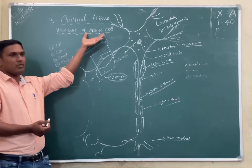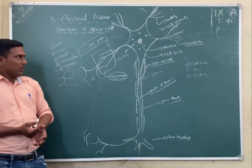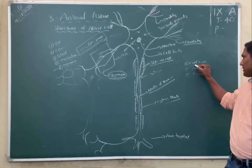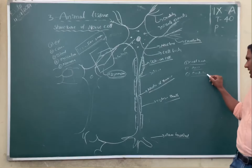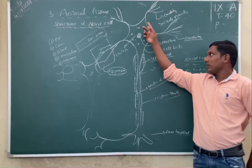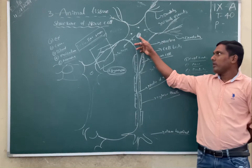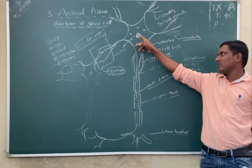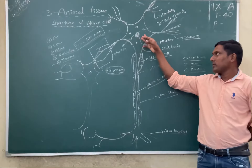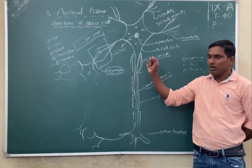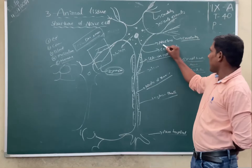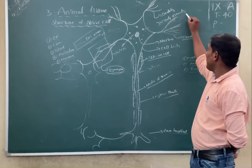Now let us discuss about the structure of the nerve cell, the structure of the neuron. The neuron may be classified into three parts. One is called the cell body, one is called the axon, and one is called the dendrites. So in the cell body, the nucleus is present. The nucleus has a dog-leg structure. Surrounding the nucleus is the cytoplasm. In the cytoplasm, there are granule-like structures called Nissl bodies.